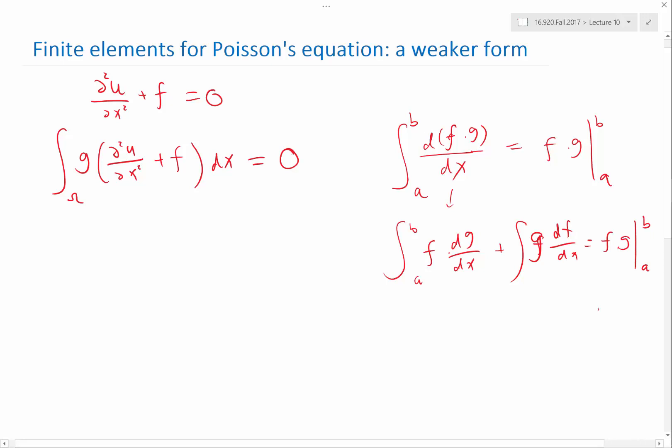And now, if I apply this formula to here, especially to this term, and consider, I think I shouldn't use f, let me use h. So h replaces f over here. And let's substitute h is equal to partial u partial x, which is what we are doing here. Then this term is actually g times dh dx, right?